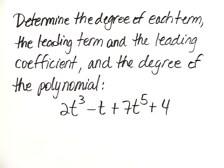Determine the degree of each term, the leading term and the leading coefficient, and the degree of the polynomial 2t cubed minus t plus 7t to the fifth plus 4.